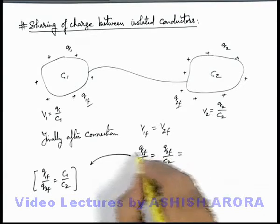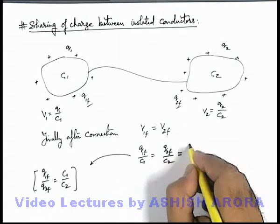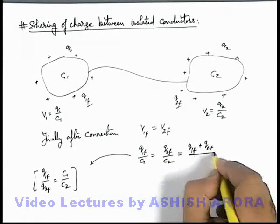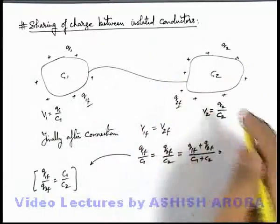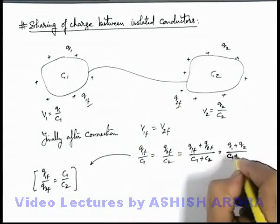In parallel we can also write q1f, q2f, c1, c2 - we can write q1f plus q2f divided by c1 plus c2. The sum of charges will remain equal to the sum of initial charges which is q1 plus q2 by c1 plus c2.